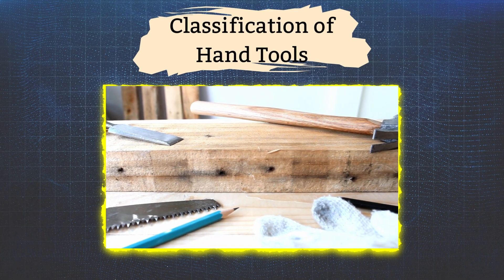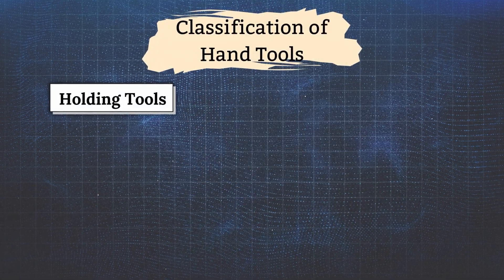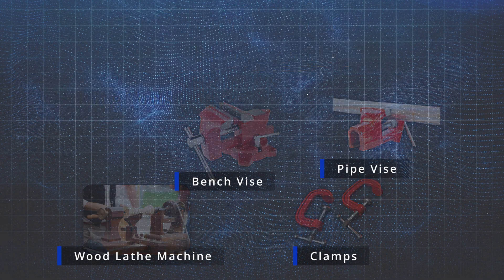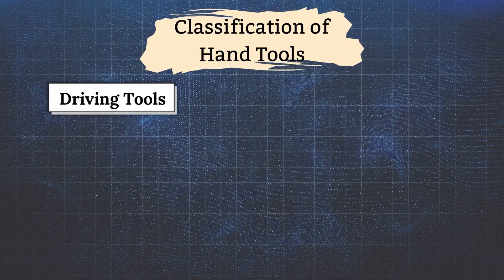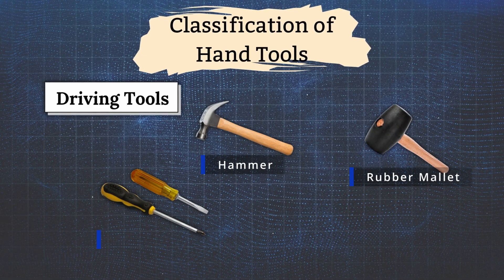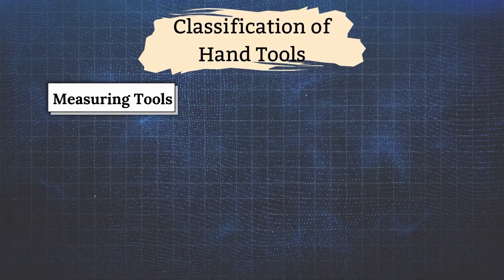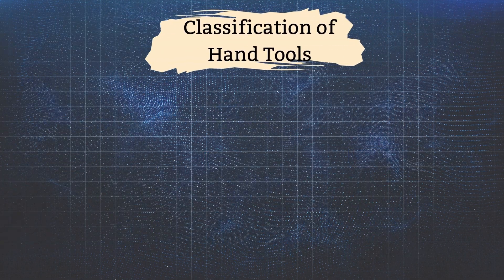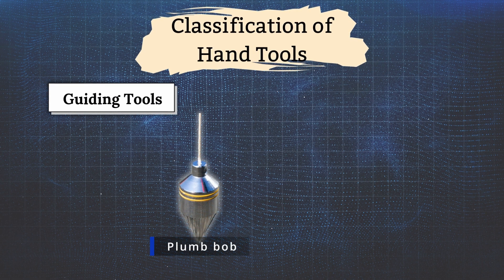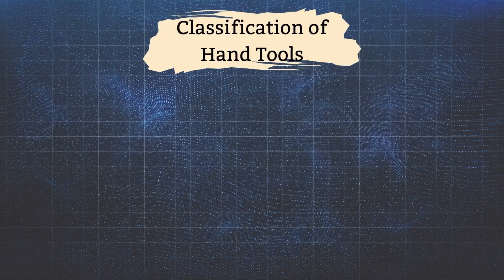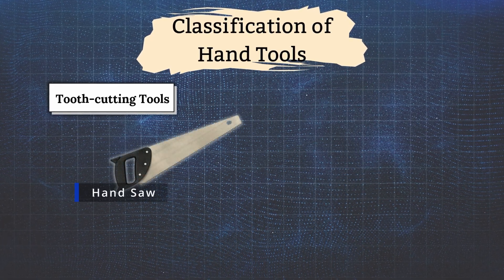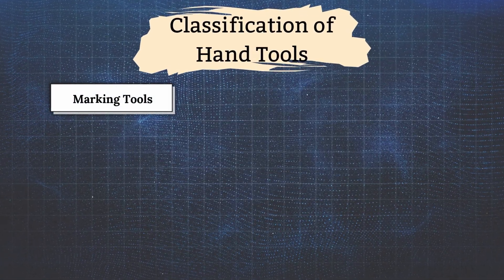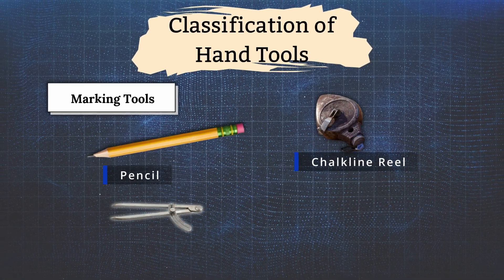Here are some prevalent classifications of hand tools. Number one, holding tools — examples are bench vise, pipe vise with lay machine, and clamps. Number two, driving tools — examples are hammers, rubber mallets, and screwdrivers. Number three, measuring tools — examples are push-pull tape, caliper, ruler, measuring wheel, meter stick, and wire gauge. Number four, guiding tools — examples are plumb bob and level hose. Number five, tooth cutting tools — examples are hand saw, hacksaw, and coping saw. Number six, marking tools — examples are pencil, chalk line reel, divider, and scratch awl.